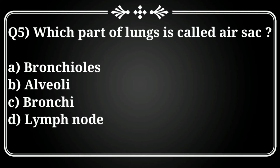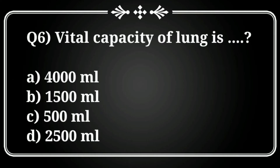Question 5: Which part of the lungs is called the air sac? Options: A) Bronchial, B) Alveoli, C) Bronchi, D) Lymph. The correct answer is option B, Alveoli. Alveoli are the part of the lungs where gas exchange occurs — oxygen from the air is exchanged into the body.